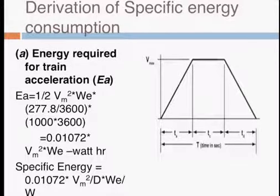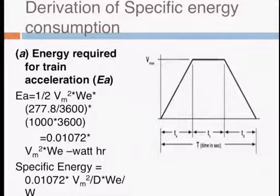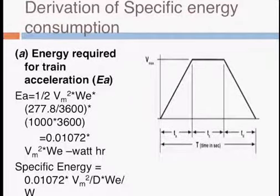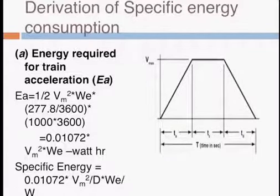The energy required for train acceleration: the final equation we get for energy required during acceleration will be 0.01072 multiplied by Vm squared, divided by D, multiplied by W_r divided by W. This is derived from the equation of tractive effort required during acceleration.